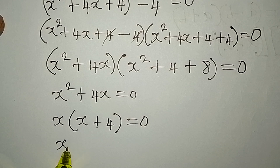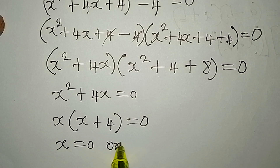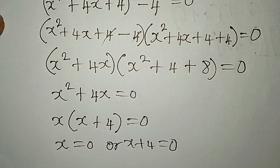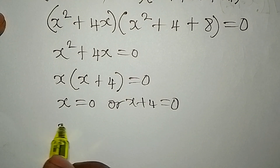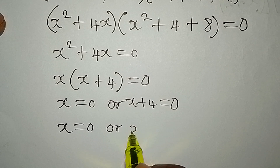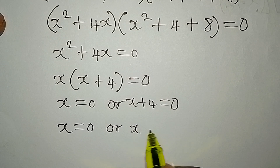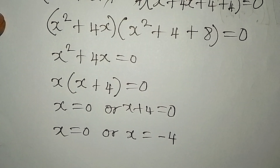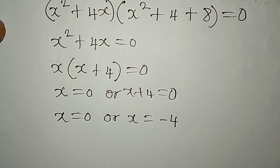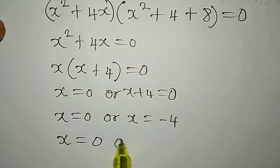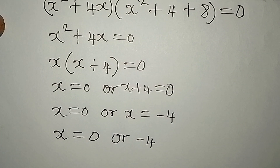So x equals zero, or x plus 4 equals zero, giving x equals negative 4. From the first part, our solutions are x equals 0 or x equals negative 4.